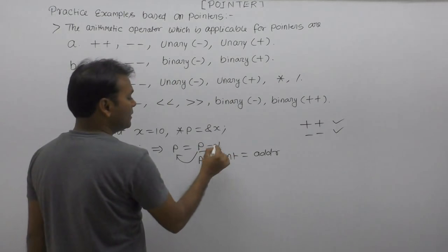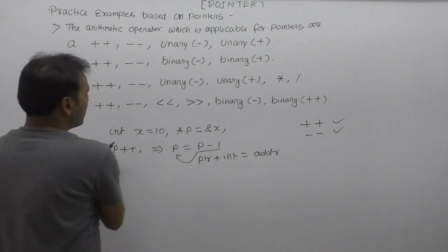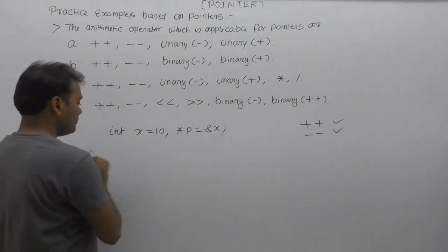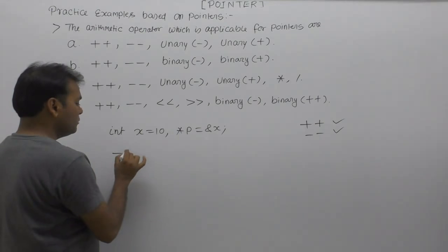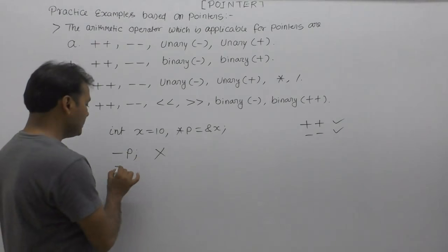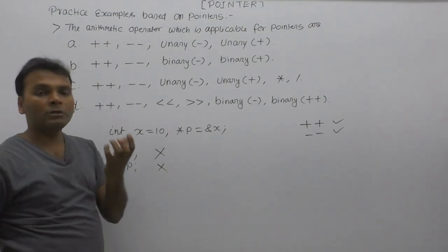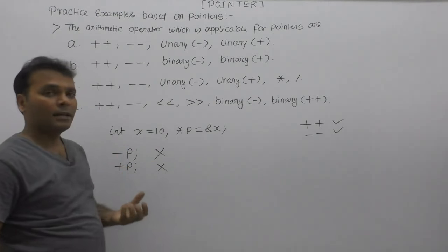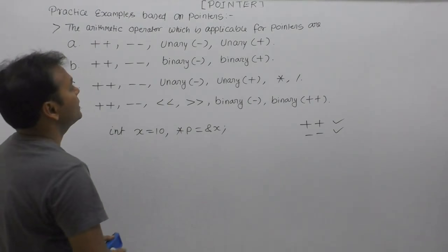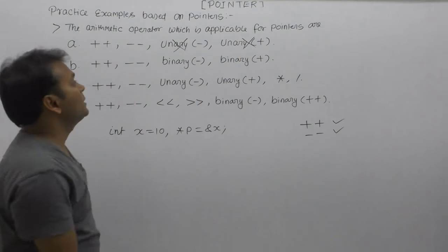For pointer cases, adding an integer is possible and subtracting is also possible. Next case: other operators like unary minus or unary plus. If you apply unary minus to a pointer, it is an invalid operation. Similarly, unary plus is also invalid, because a pointer is just a memory address — applying a sign to an address makes no sense. Therefore, applying unary operators to pointers is incorrect.